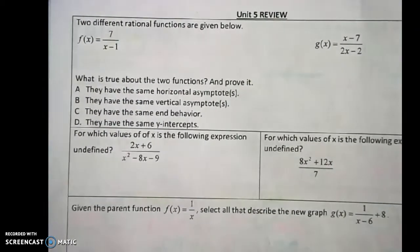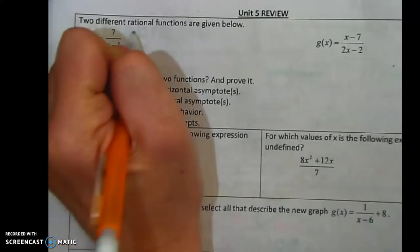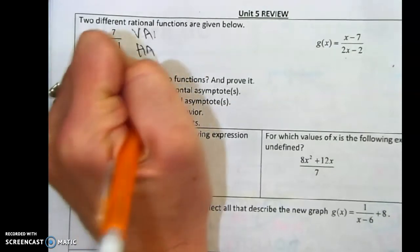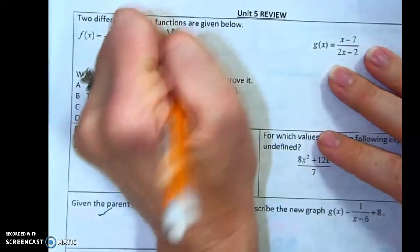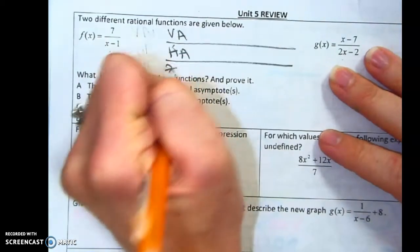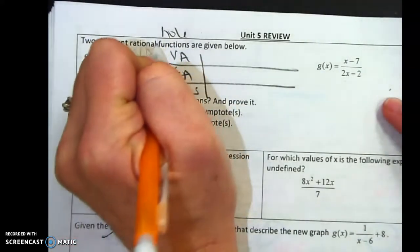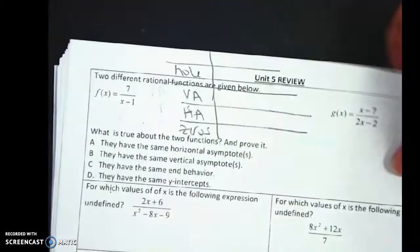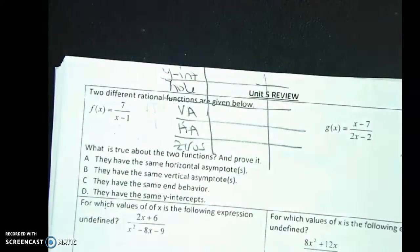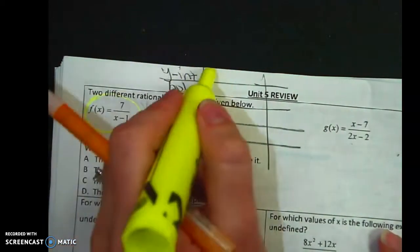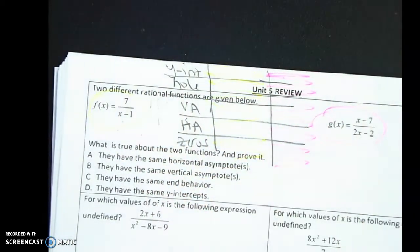You're going to have a question where you're going to have two functions, and you're going to have to compare the two and decide which ones are the same. So we have a VA, an HA, there's zeros, there's a hole, there's a y-intercept. Everything here is going to go there, and then everything here is going to go there, so I can easily tell the differences.